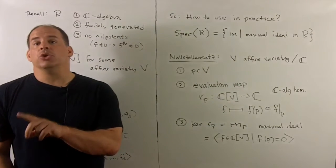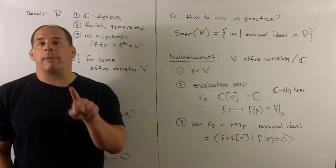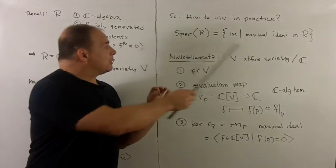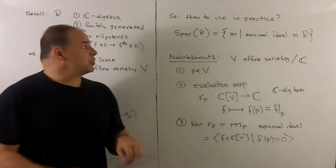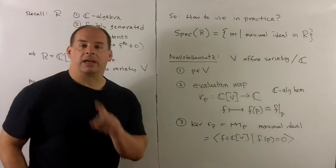Notation: usually Spec is reserved for prime ideals. For maximal ideals we use Spec M, but to be consistent with our sources, we're just going to use Spec, okay, Cox, Little, and Shea.